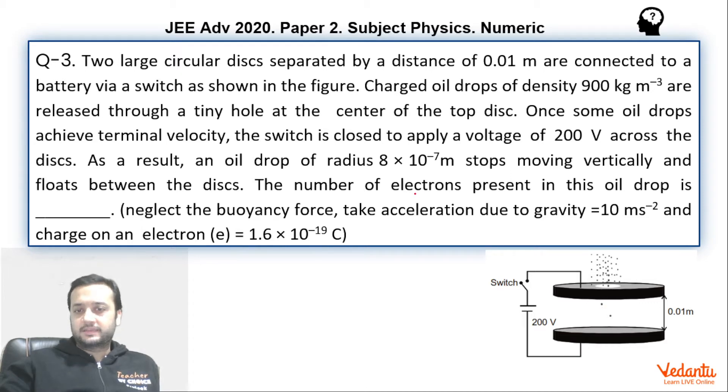Basically, it is given that the charge is negative because electrons means negative charge. Let us quickly analyze this question. It's a very simple question. When the circuit is open, the gravitational force must have been balanced by viscous force. Viscous force must be acting in the upward direction, balancing the gravitational force.